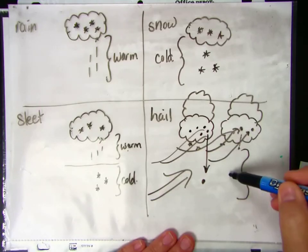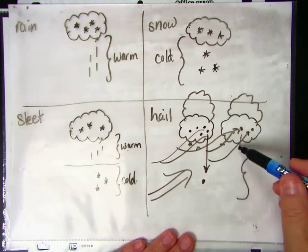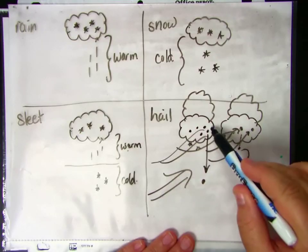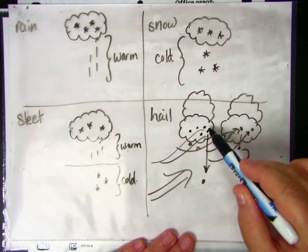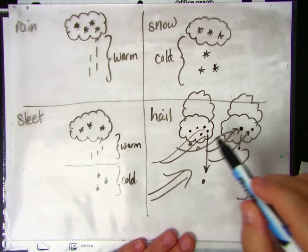Now, it doesn't matter if it's warm or cold, because you can have hail in the middle of summer or you can have hail in the middle of winter. What's required is that wind that scoops the precipitation back up into the clouds and has it form into a ball of ice.